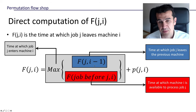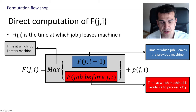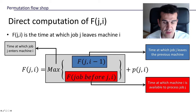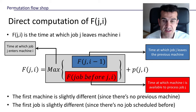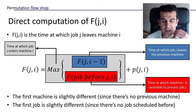There are two edge cases: first, the first machine has no previous machine; second, the first job has no job scheduled before it. These special cases are actually easier to compute than the general case, but they must be treated somewhat separately. Just think for a couple of minutes about how to handle them.